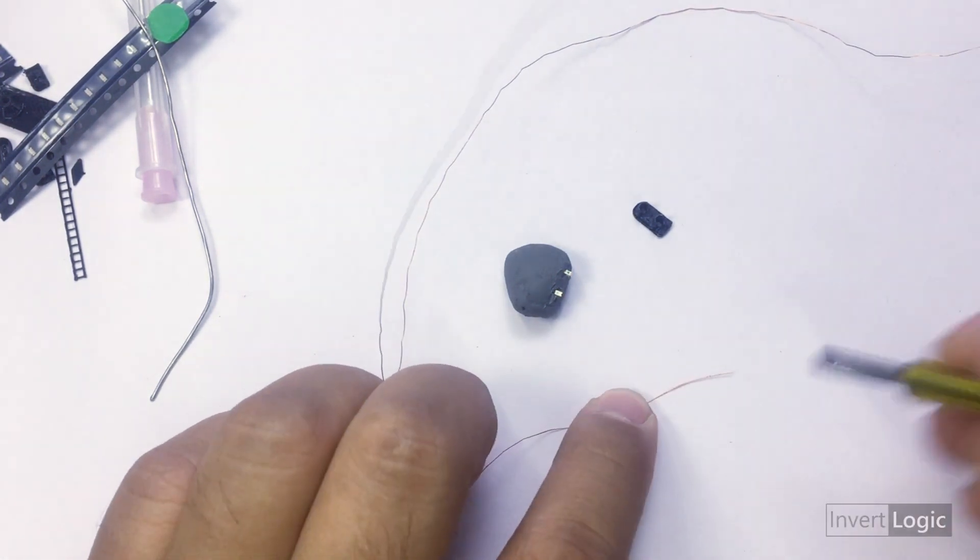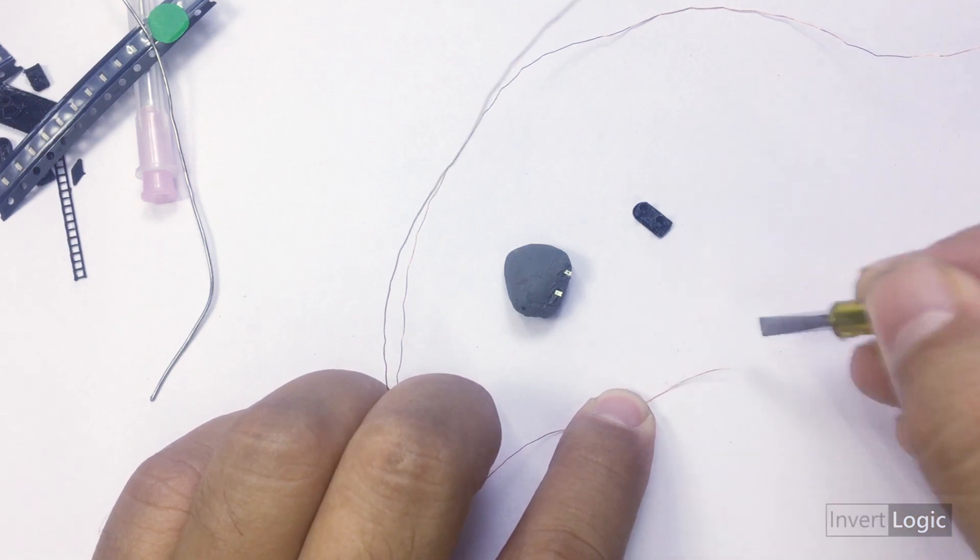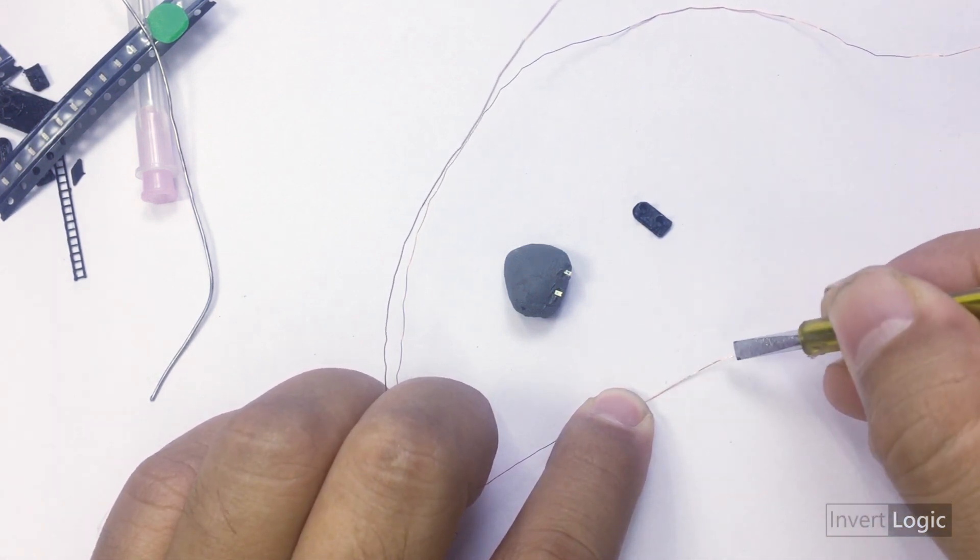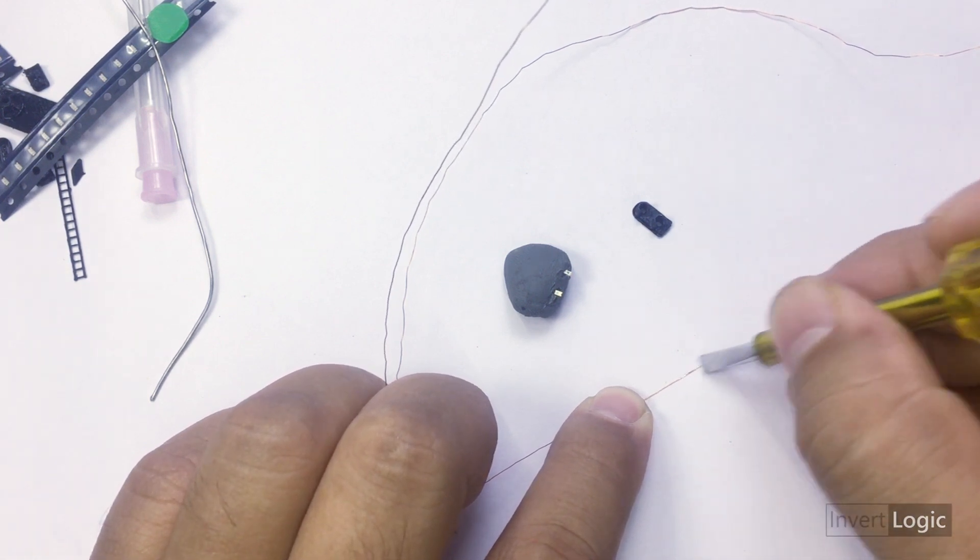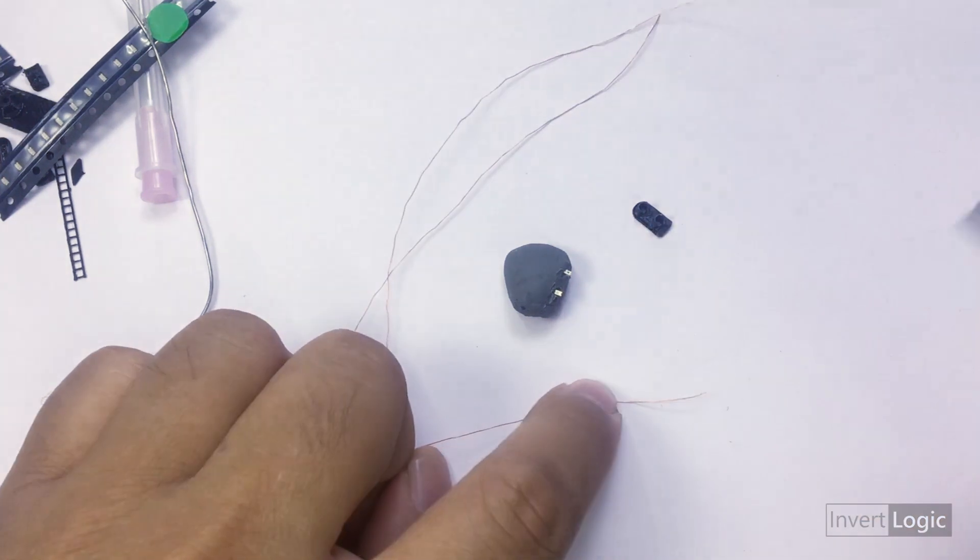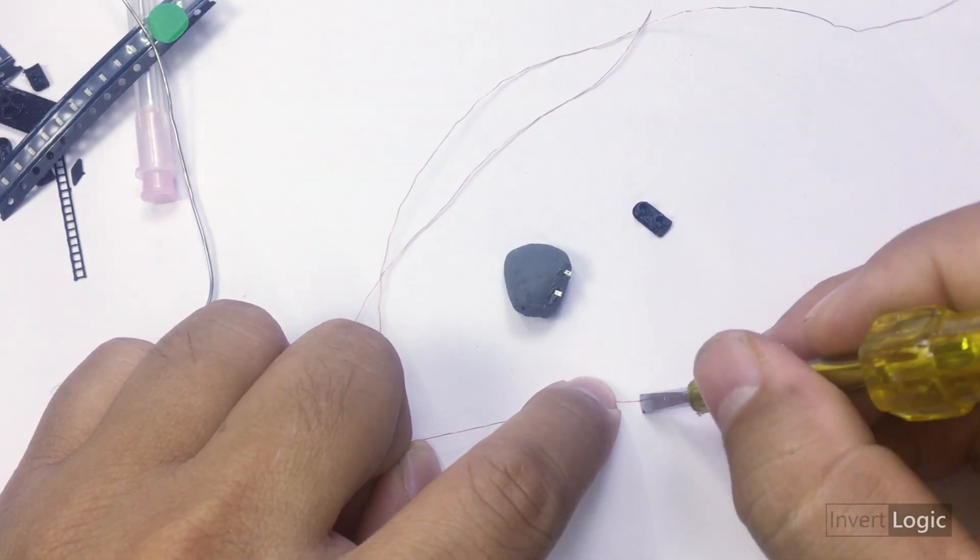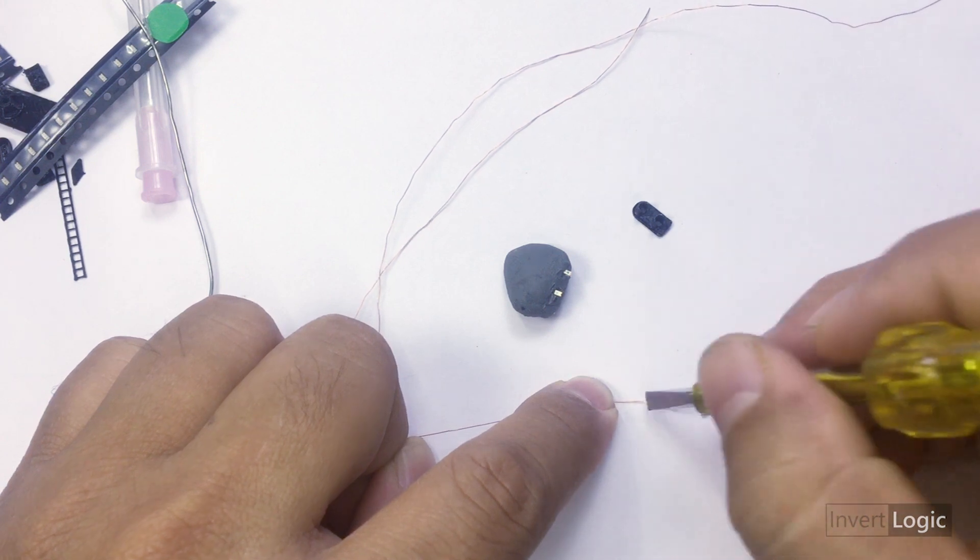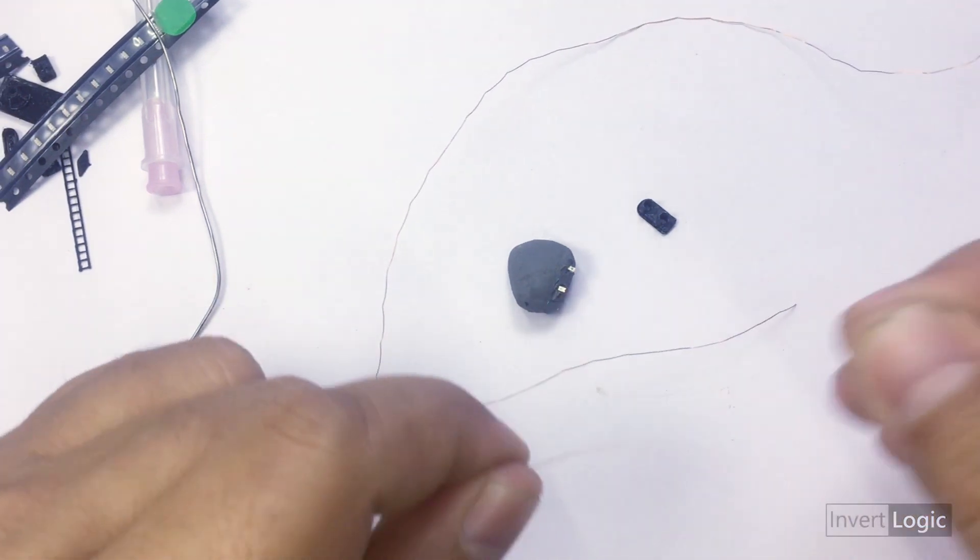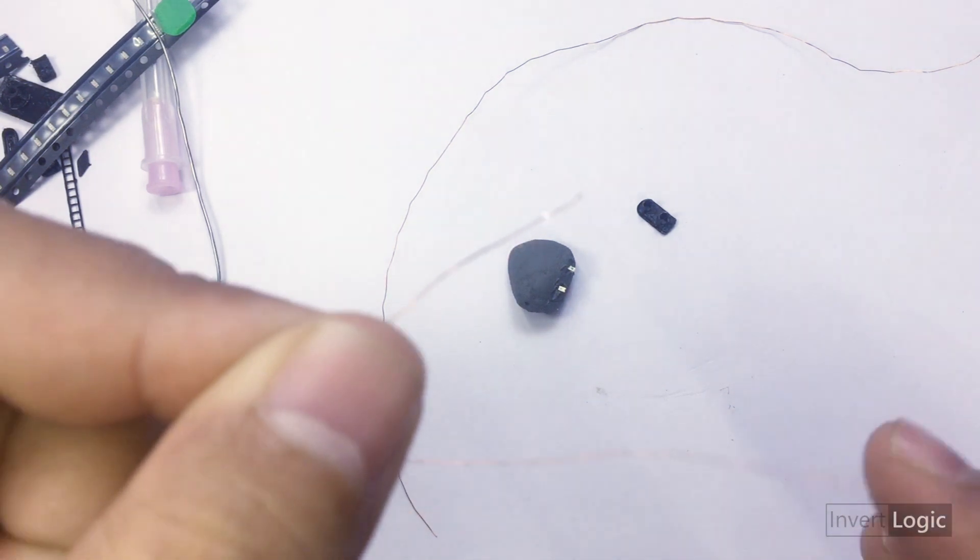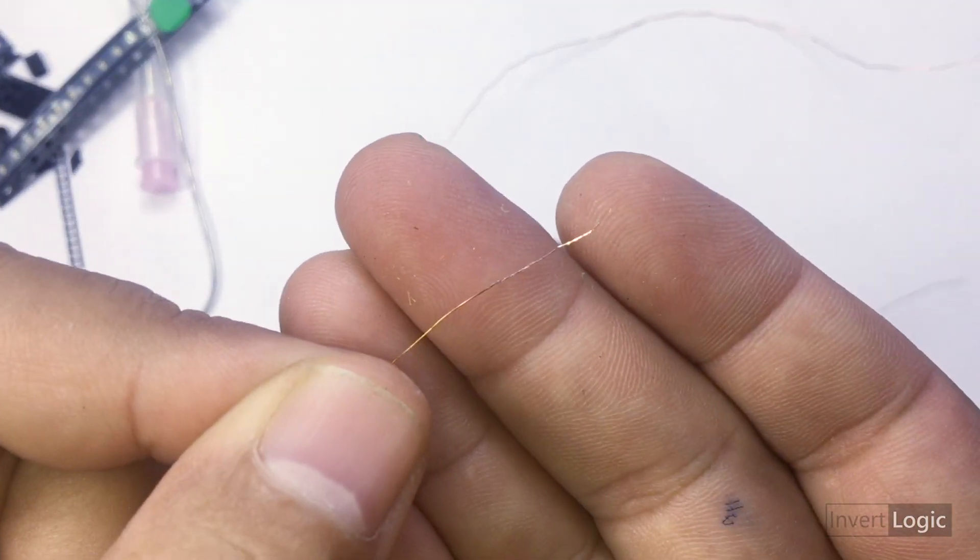These enamel wires have a protective coating on them, so we will need to remove that coating by just scrubbing or scratching the surface of the wire with any screwdriver, cutter, or sharp object. It should look shiny and reflective.